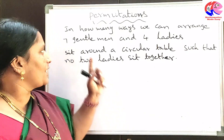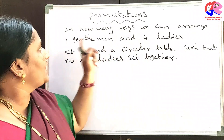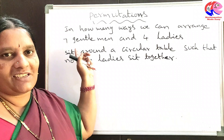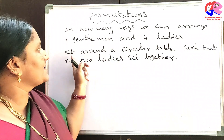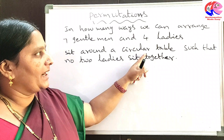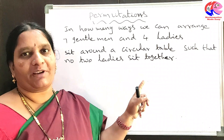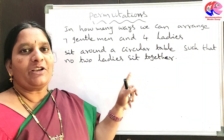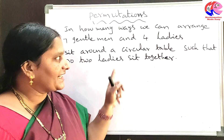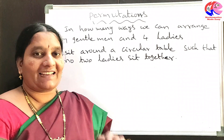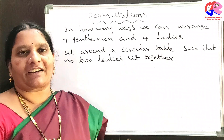The question is: in how many ways can we arrange 7 gentlemen and 4 ladies sitting around a circular table such that no 2 ladies sit together?